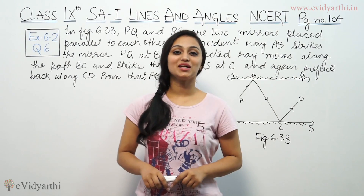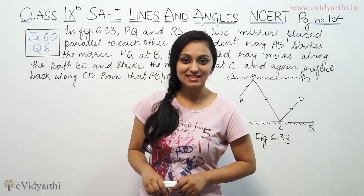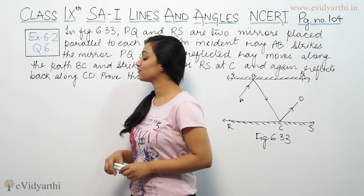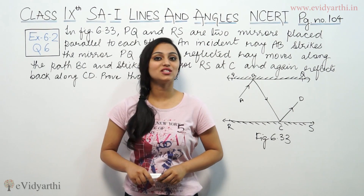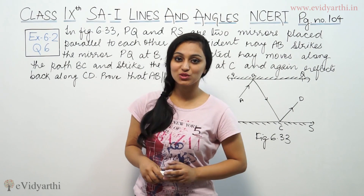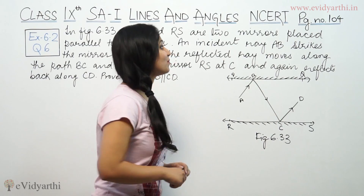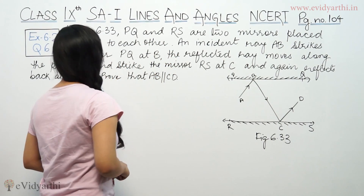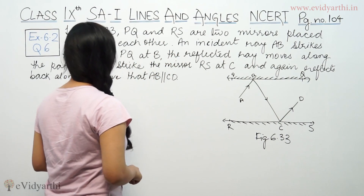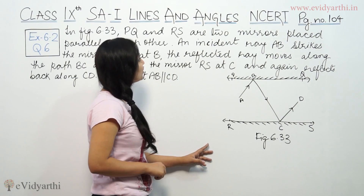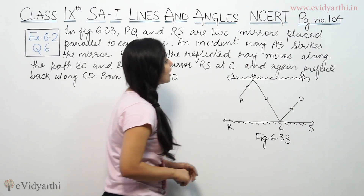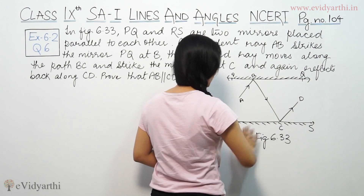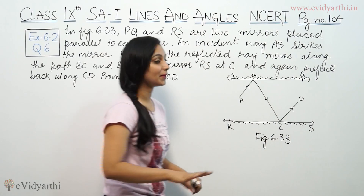Hi, this is Khushbu with another question of lines and angles. This is question number 6 from exercise 6.2, page number 104. It says PQ and RL are two mirrors. This is PQ, this is RL — they are two mirrors.